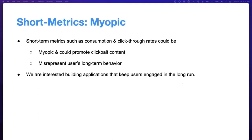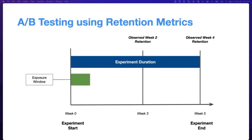Another metric one can use in these scenarios is retention rate — the proportion of active users at the end of N weeks, often referred to as WAU (weekly active users) at week N. The major drawback of such long-term retention metrics is that we need to decide what N should be, and we need to run the A/B test long enough to be able to measure these quantities.